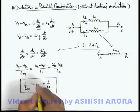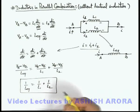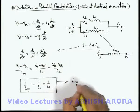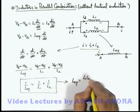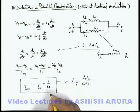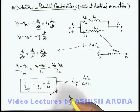And the expression is similar to that of the parallel combination of resistances. So you can always write that for two inductors in parallel, equivalent self-inductance can be given as L1 L2 over L1 plus L2. And for more inductors in parallel combination, we can use the sum of reciprocals is equal to the reciprocal of equivalent self-inductance.